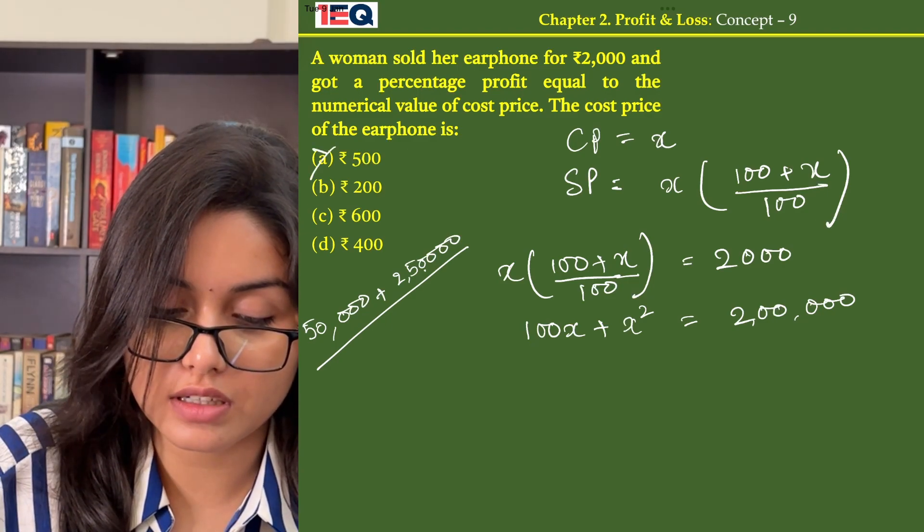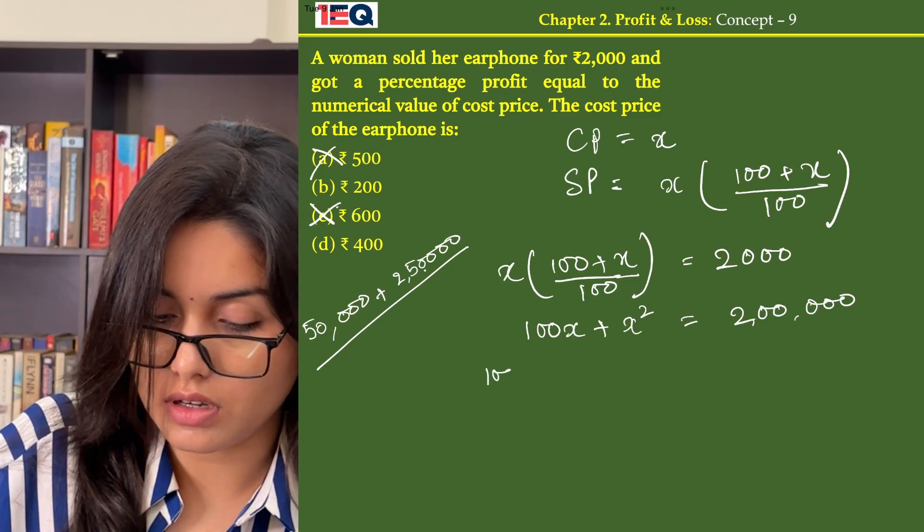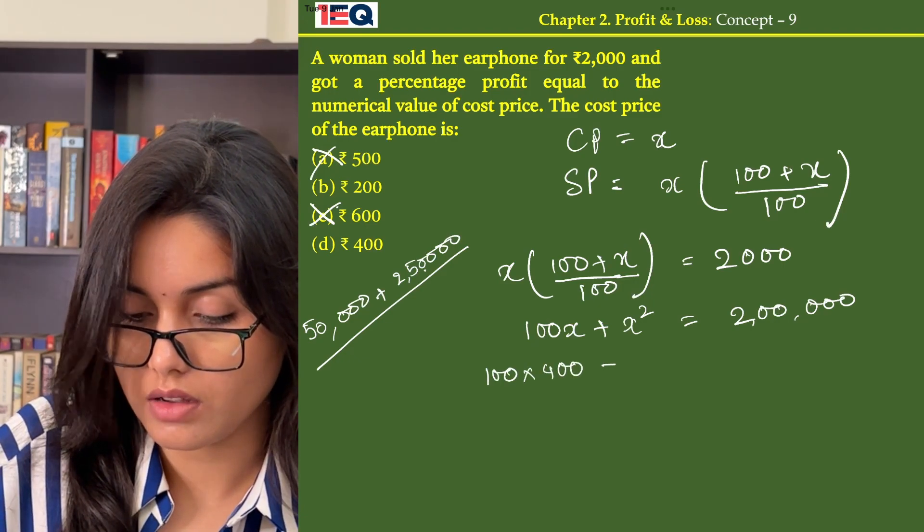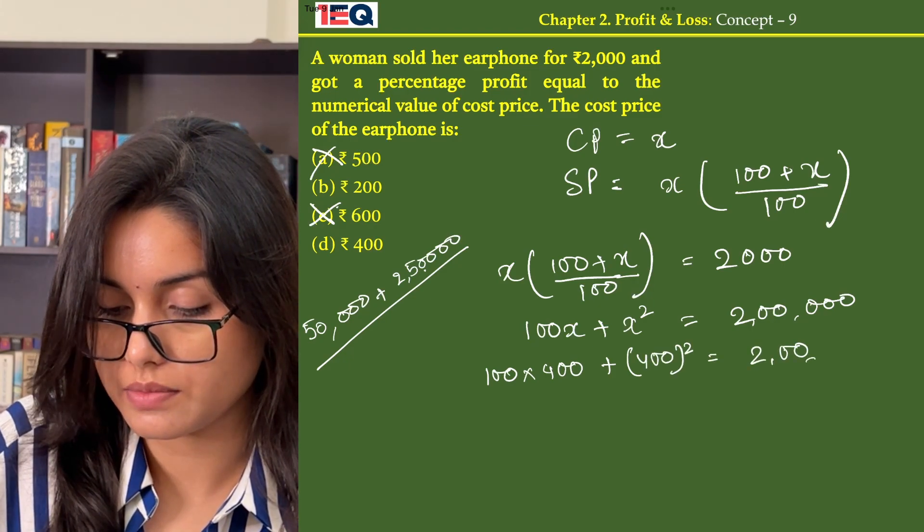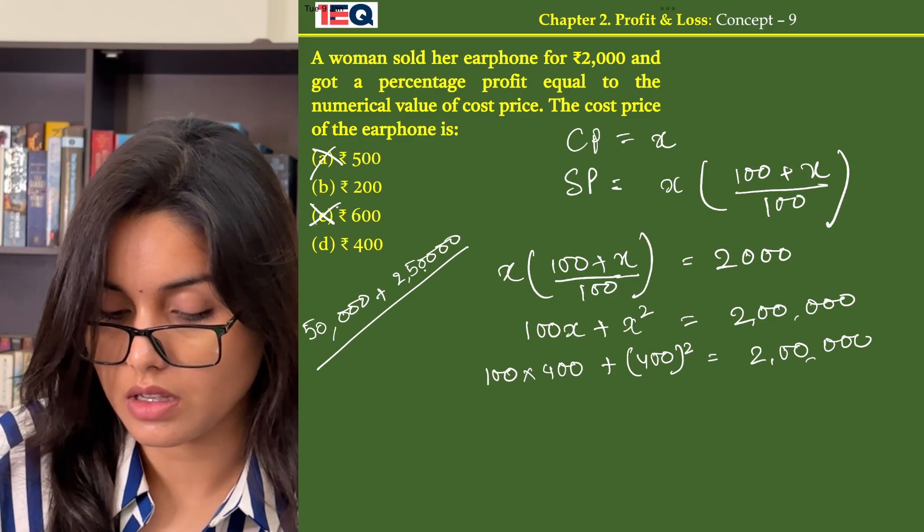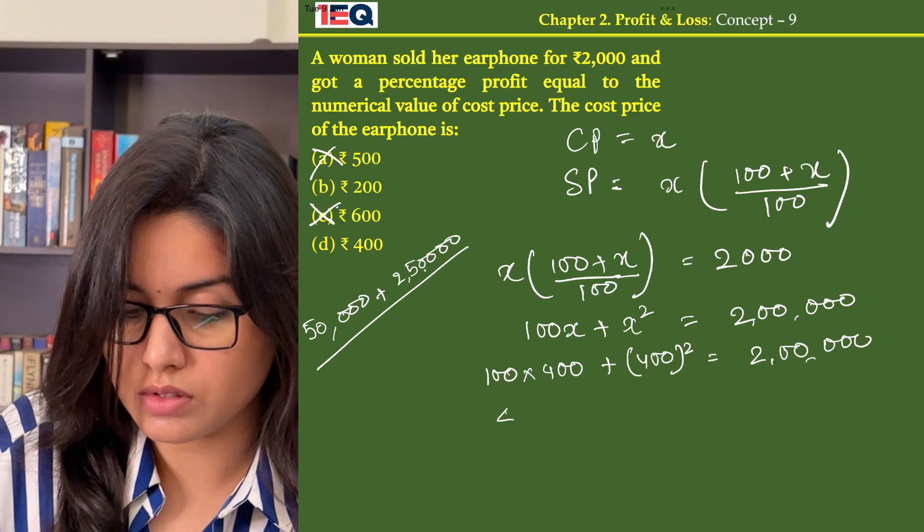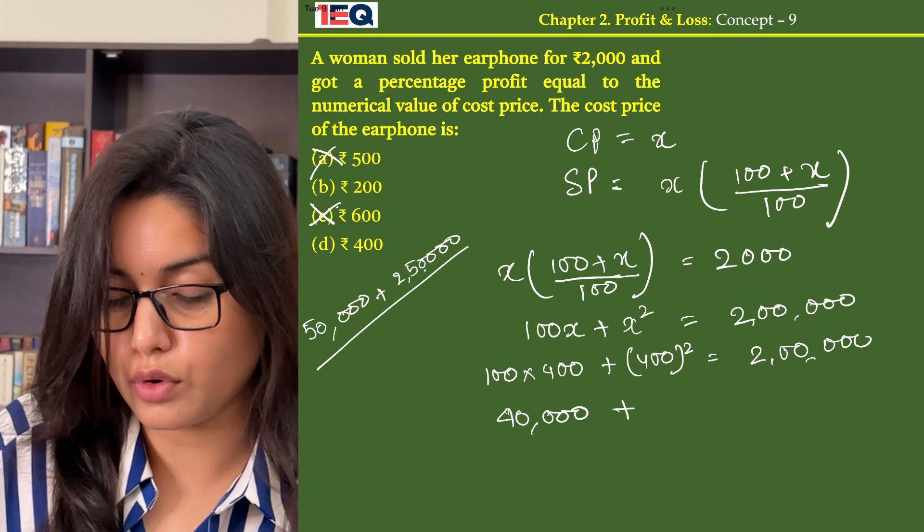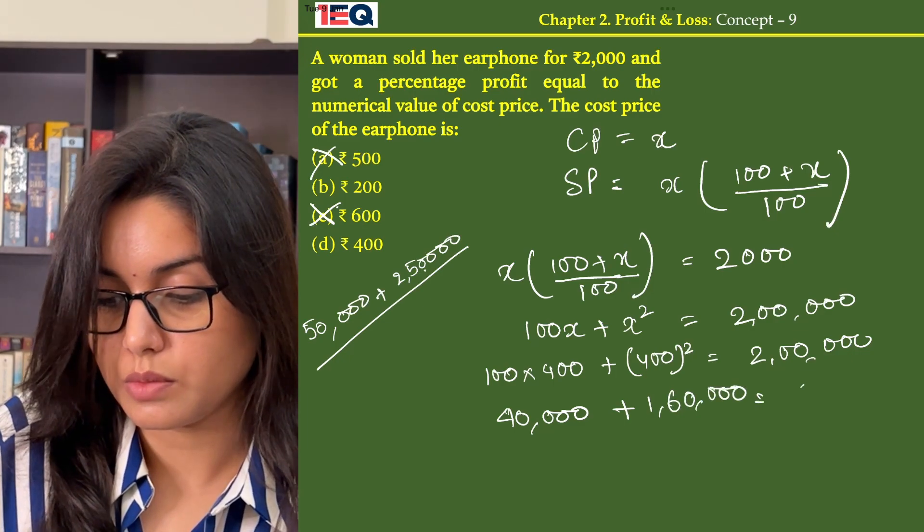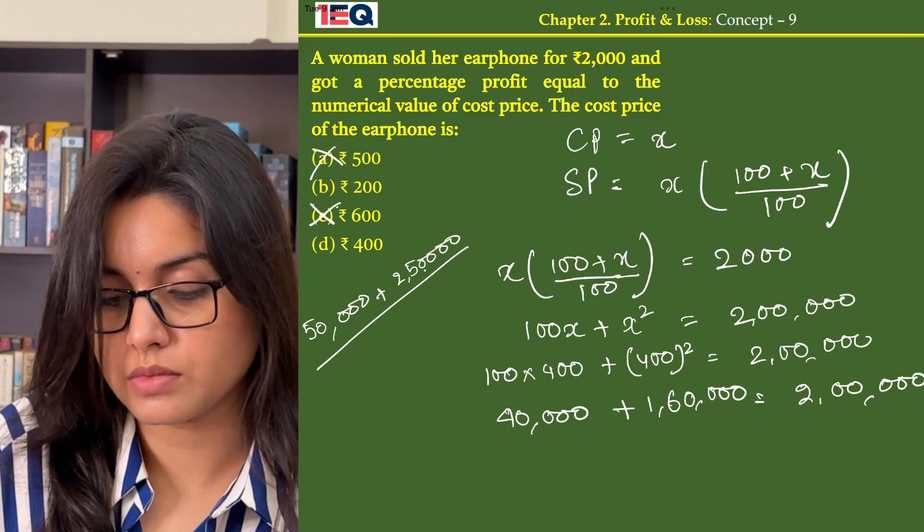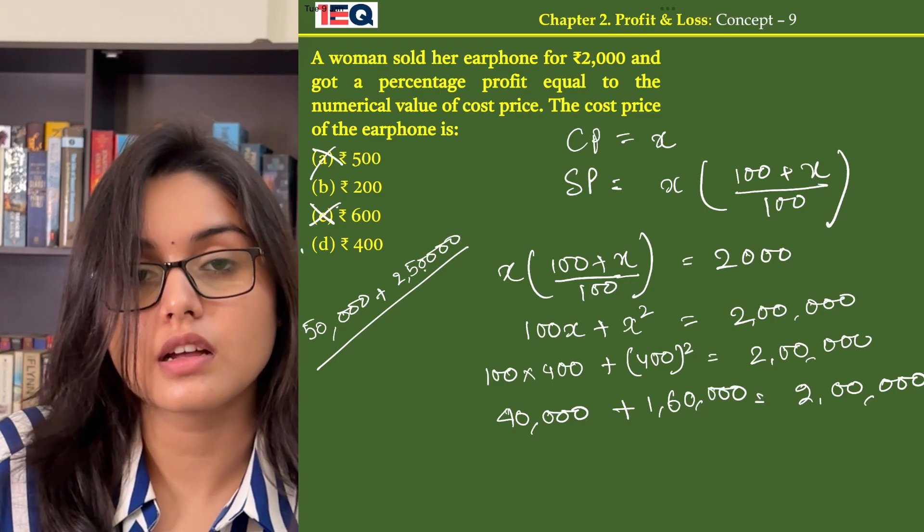So if 500 is not an option, 600 will also not be an option. Let's check for option D. 400 square equals to 2 lakh. 100 into 400 is 40,000 and 400 square is 1 lakh 60,000 which is equal to 2 lakh. So my answer is option D.